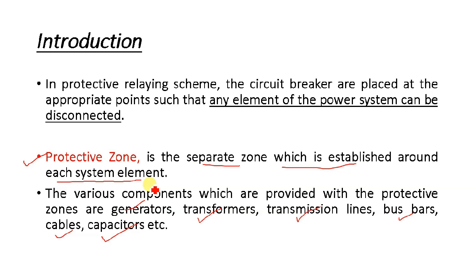The various components of our power system — it can be a generator, a transformer, a transmission line, and all other things — must be covered by our protective zone. A protective zone is nothing but a separate zone established around each system element, and relays will operate within that zone only.